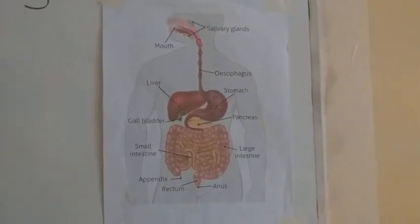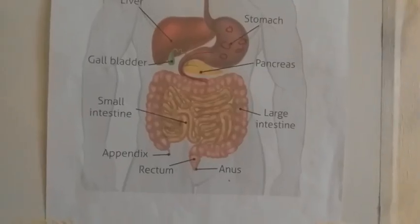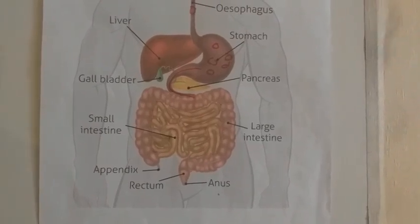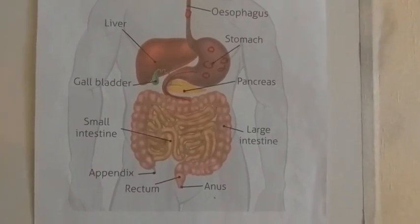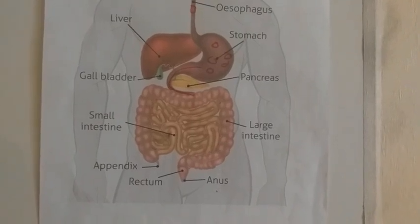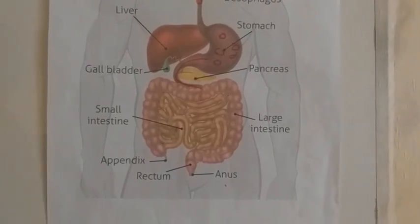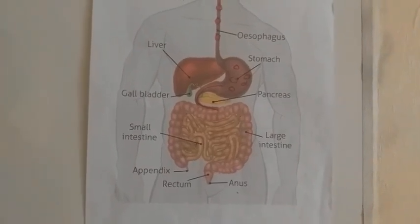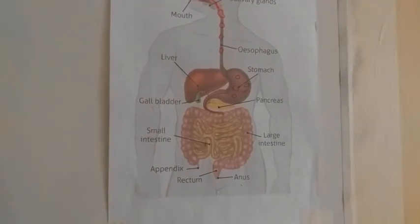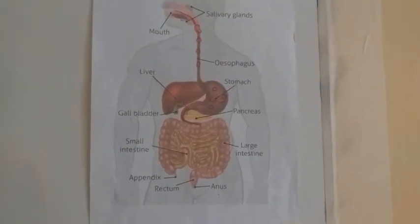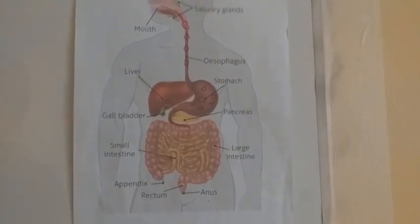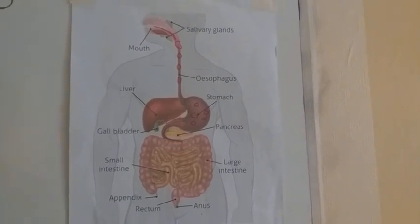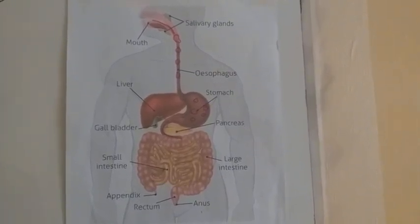Now we move to the stomach. In the stomach, we find that the walls of the stomach release digestive juices which digest food. Now in between the stomach and the small intestine we have the pancreas and we have the liver. In the stomach, hydrochloric acid is also released, which kills the germs that might be present in the food coming from the mouth.